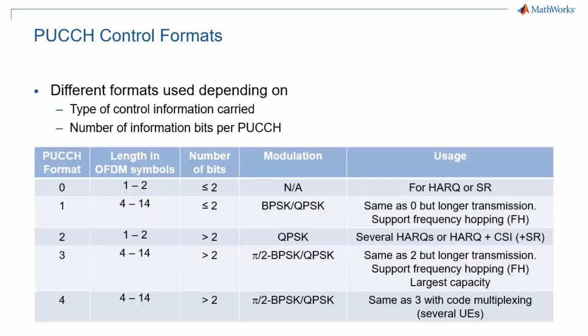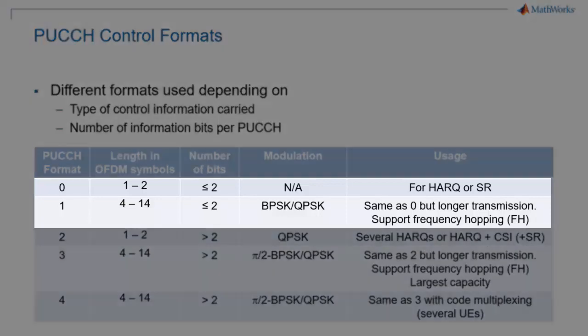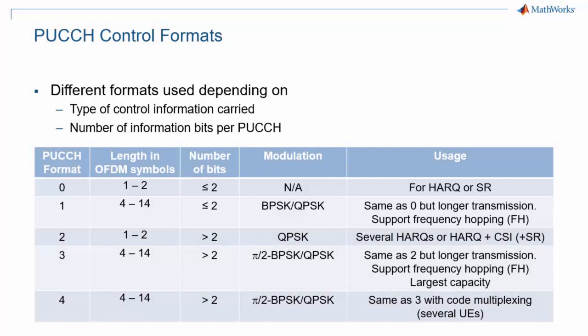Depending on the content of the UCI, one or more of several formats can be used. There are two basic cases for transmissions: payloads smaller than 2 bits and payloads larger than 2 bits. Payloads smaller than 2 bits use format 0 or format 1. Such payloads represent one or two ACK/NAK or scheduling requests. Format 1 is a longer alternative to format 0, which is useful for power-limited or cell-edge scenarios.